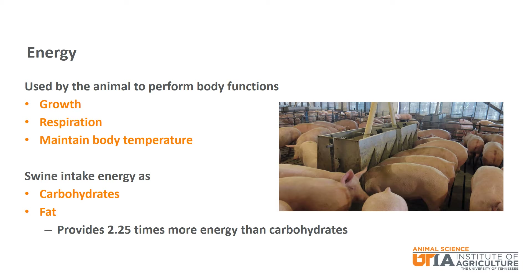We will now go more in depth about these five main nutrients. The first is energy. Energy is used by the animal to perform many body functions. Some examples include growth, respiration, and maintaining body temperature. Swine consume energy in two forms, as carbohydrates and as fat. It is important to note that fat provides 2.25 times more energy than carbohydrates.